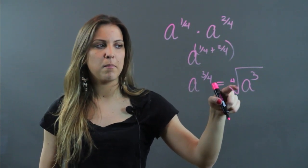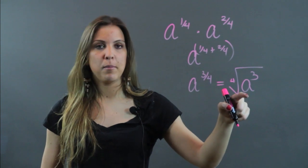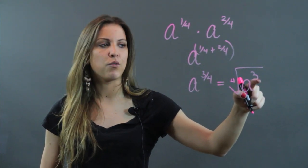The way that I did it was take the denominator, make it become your root, and then keep your base and make the numerator become your new exponent inside of the radical.